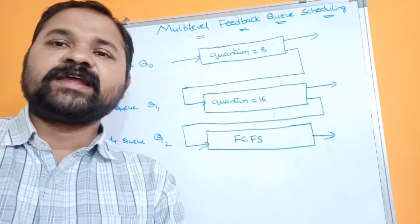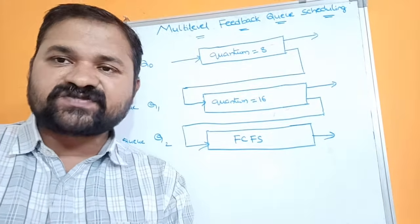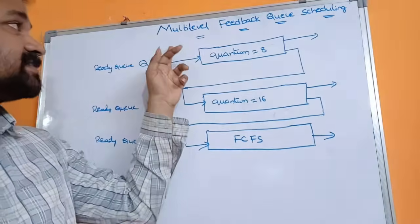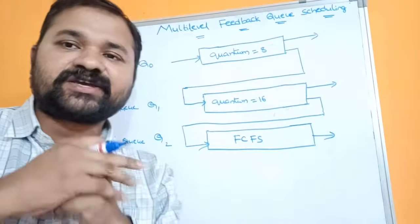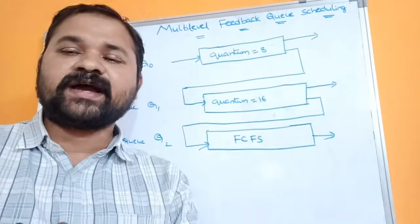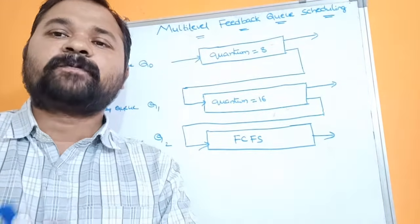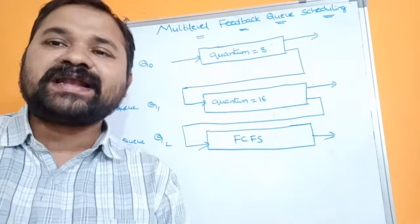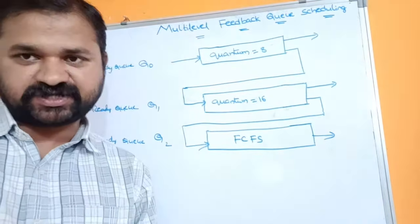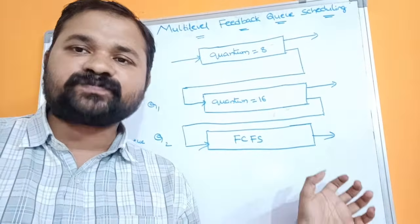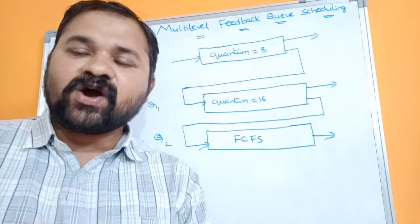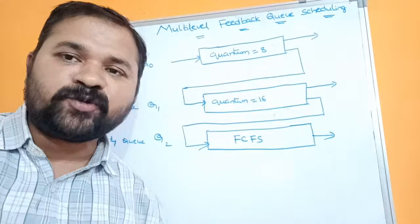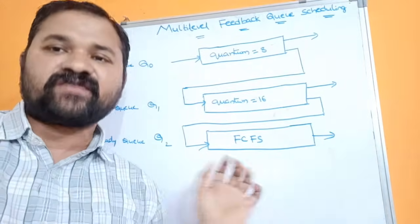In every other scheduling algorithm we use only one ready queue. Whereas a multi-level feedback queue scheduling algorithm partitions the ready queue into multiple ready queues. So here instead of a single ready queue, we have multiple ready queues available.